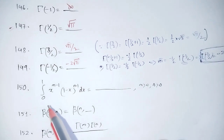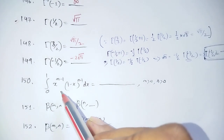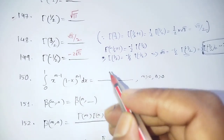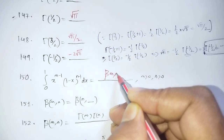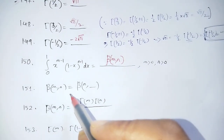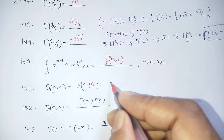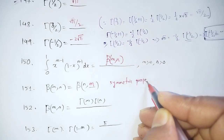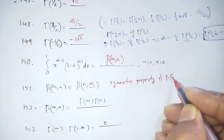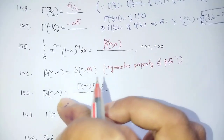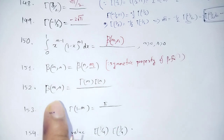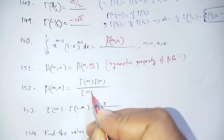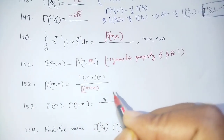Next question: Integration from 0 to 1 of x^(m-1) · (1-x)^(n-1) dx, where m and n are positive — this is the definition of the Beta function β(m,n). The Beta function has the symmetric property: β(m,n) = β(n,m).